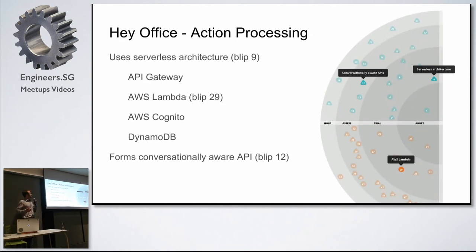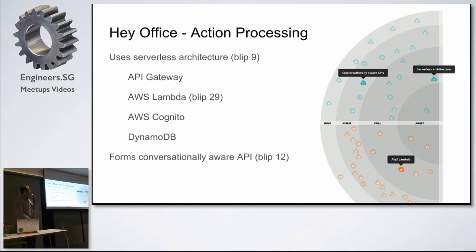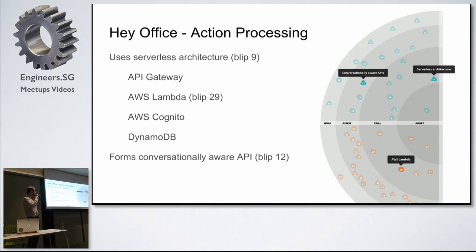For action processing in Hey Office, since it's an internal project and we want to play around, we've decided to use a serverless architecture — going quite heavily into the Amazon space. We're using Amazon API Gateway, Lambdas, Cognito, DynamoDB, and a few others to hang all the actions together and get processing to work. This forms our conversationally aware API.